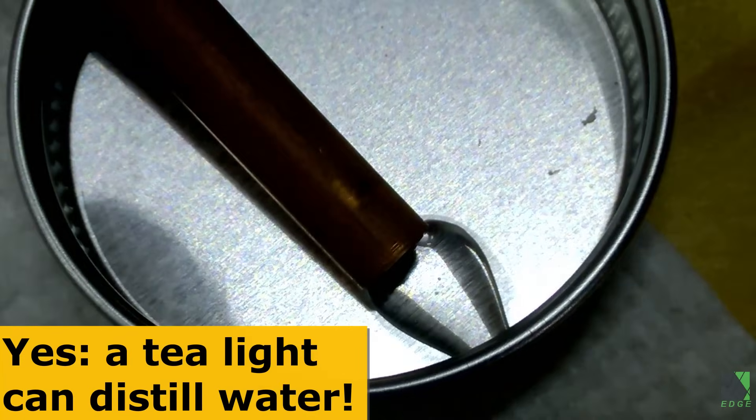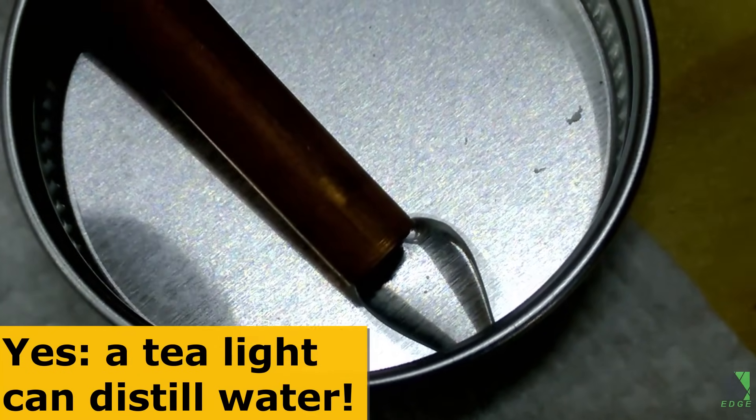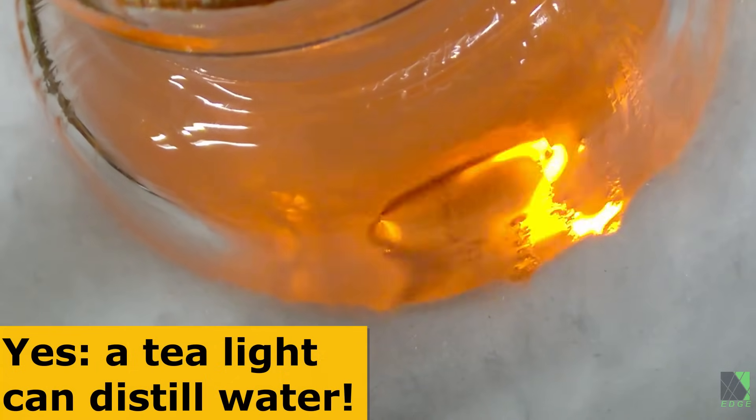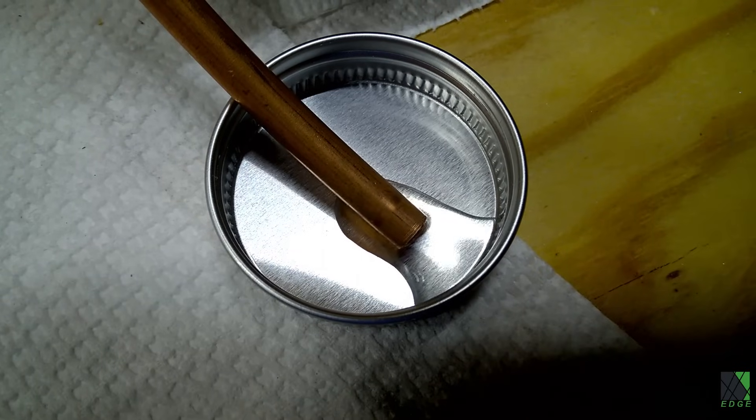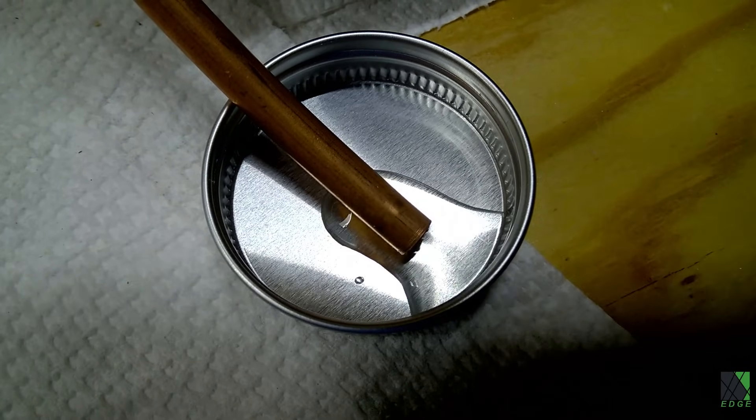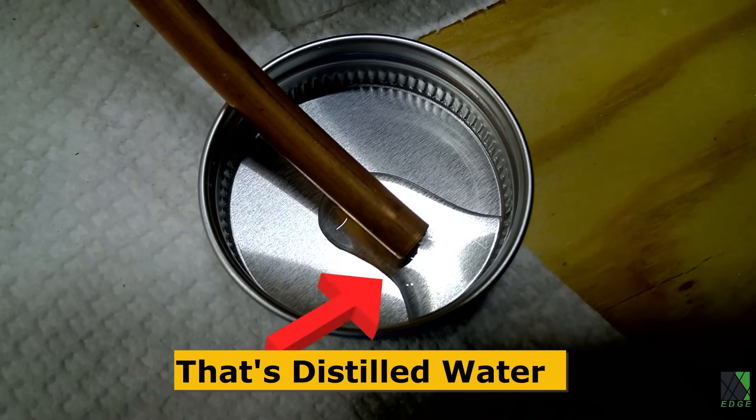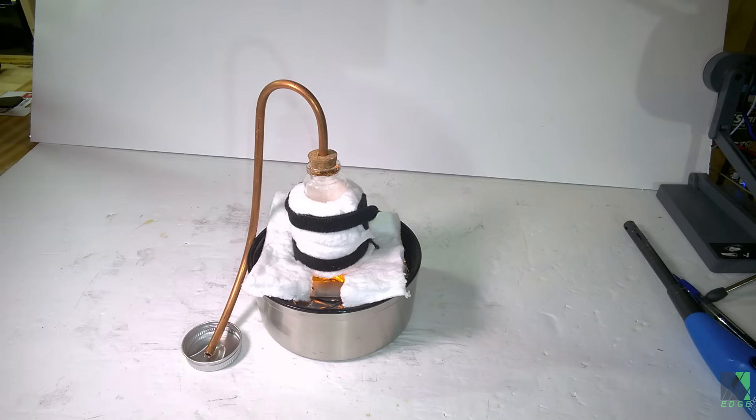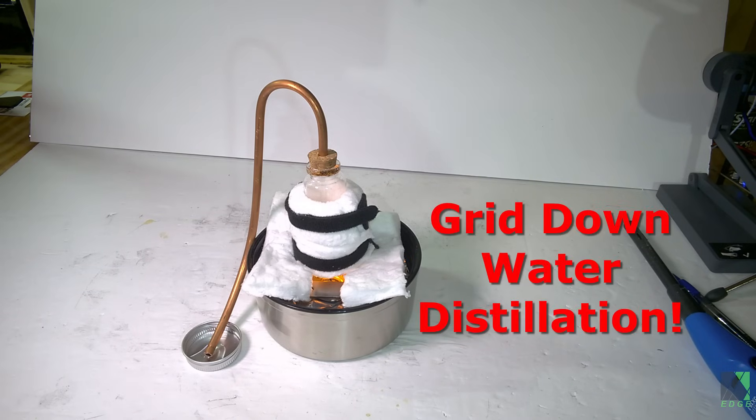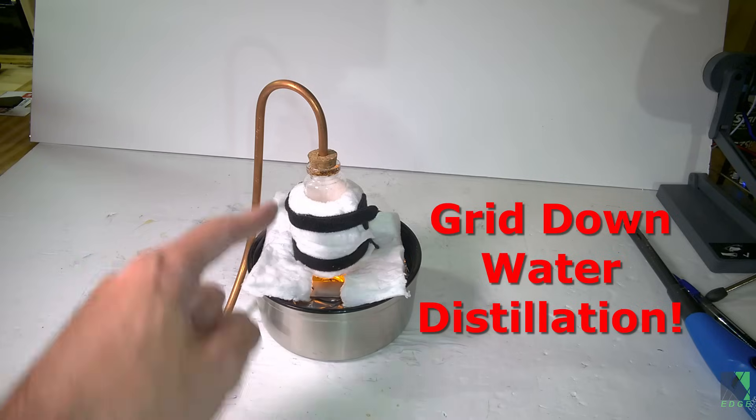I'm using this to distill water using a tea light. It seems rather strange and seems rather impossible, but it's not. There really isn't much heat to work with. And as you can see, it's putting out a little bit of water, and it is a slow process, but it is working. I would say that this is not ideal, but if you had no choice and you needed to distill purified water for whatever reason, even a tea light can do that job.